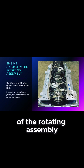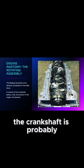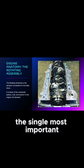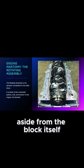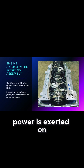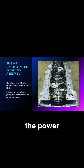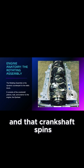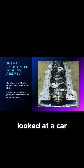The big boy of the rotating assembly is the crankshaft — probably the single most important piece of the automobile aside from the block itself. This is the component that all the power is exerted on by the combustion event — the exploding event. That power travels into the crankshaft, which spins inside the engine block.